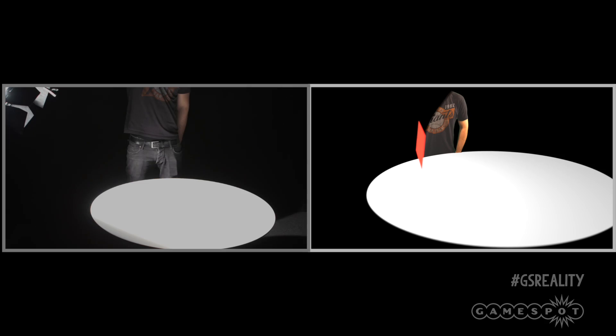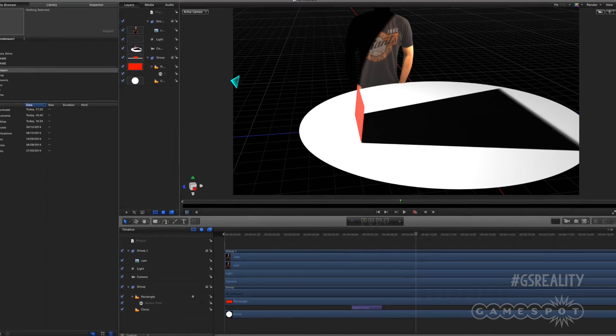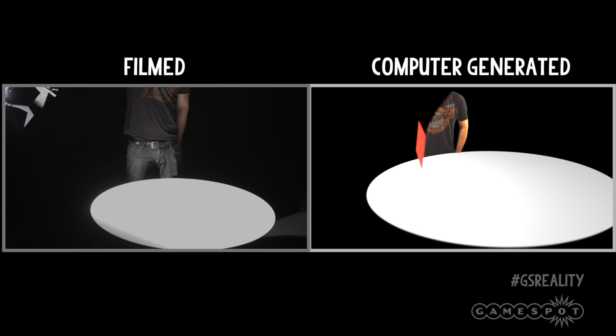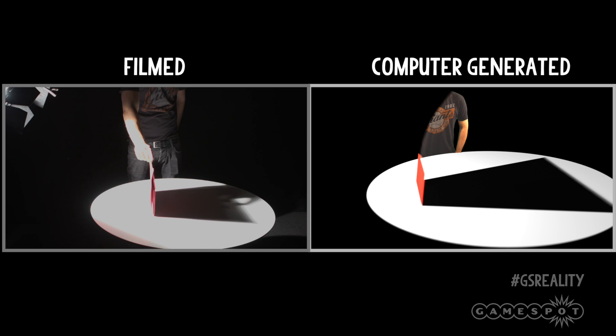I think the best way to try and understand the power and importance of global illumination is to compare traditional computer generated lighting with real life. Here we have two versions of the same scene. On the left is something I set up and filmed in our studio, and on the right is a digital scene I made in the software Motion 5. Motion 5 isn't used to make games — it's designed for making motion graphics — but the principle is the same. In both scenes, a bright spotlight is shining on a white table surface, illuminating it.